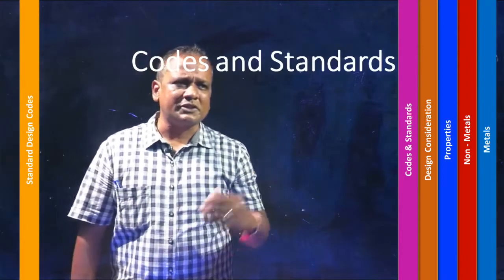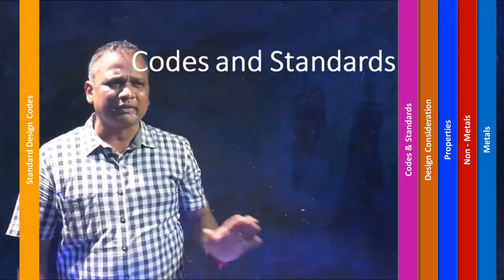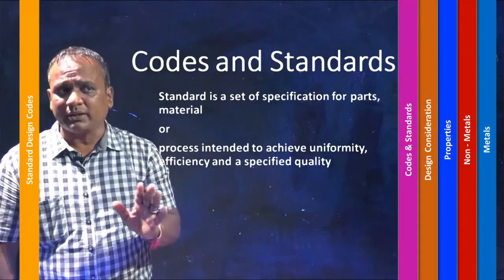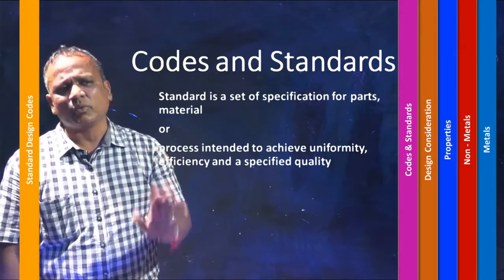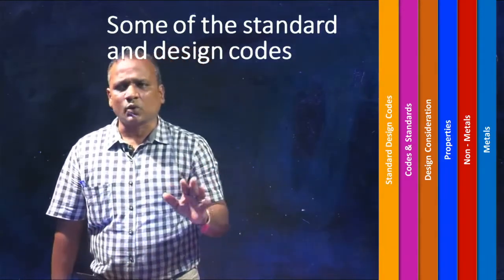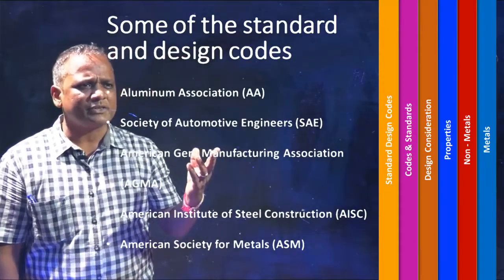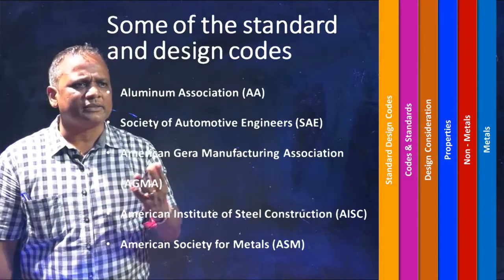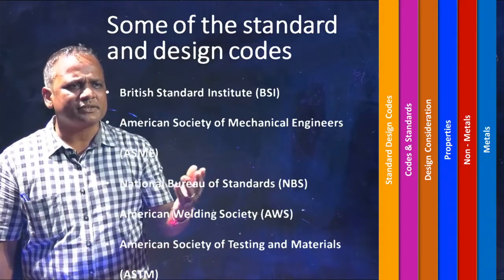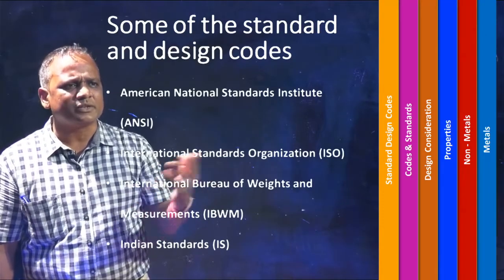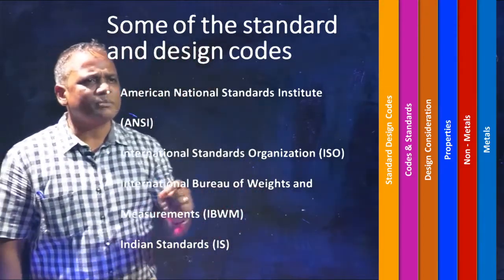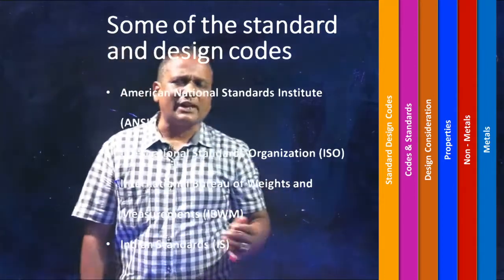Next would be standards and codes commonly used internationally by engineers. A standard is a set of specifications for parts, materials, or processes intended to achieve uniformity, efficiency, and specified quality. A code is a set of specifications for analysis, design, and manufacture. Some common standards and codes include: Aluminium Association (AA), Society of Automotive Engineers (SAE), American Geneva Manufacturing Association (AGMA), American Institute of Steel Construction (AISC), American Society for Metals (ASM), British Standards Institute (BSI), American Society for Mechanical Engineers (ASME), American National Standards Institute (ANSI), International Standards Organization (ISO), International Bureau of Weights and Measurement, and Indian Standards.